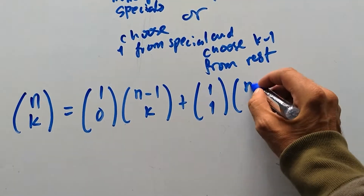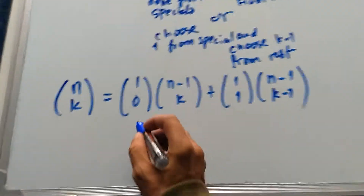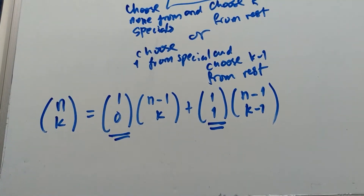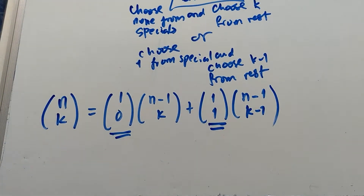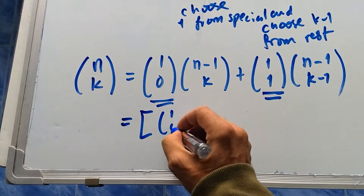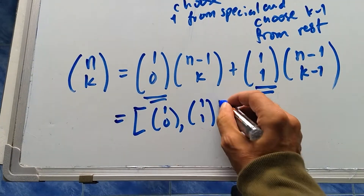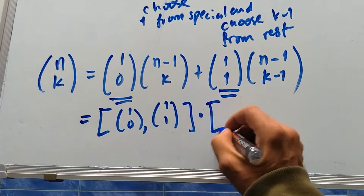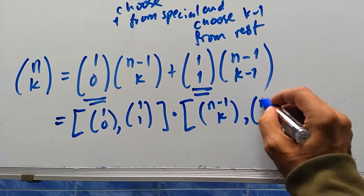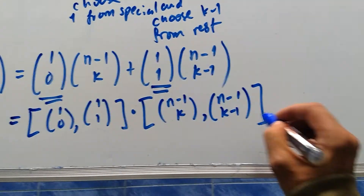We have this added finesse — this looks a lot like a vector dot product, so let's write it as one: (1,0), (1,1) dot product with (N minus 1 choose K), (N minus 1 choose K minus 1). That's very nice.